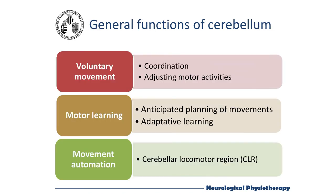In summary, the main cerebellum functions are controlling the coordination of voluntary movements and its adjustments in relation to the activity being performed, in order to execute motor activities with fewer errors and more accuracy. This is very important for quick activities. Therefore, it plays a very important role in motor learning and adaptive learning. It is also involved in automatic movements — those without a high level of attention required — an example being the automatic gait control center, or cerebellar locomotor region, located in the middle of the cerebellum, which regulates well-coordinated locomotor movements.